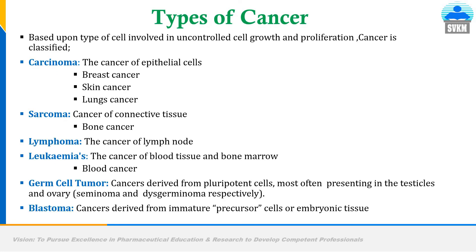What are the types of cancer? Based upon the type of cell involved in uncontrolled cell growth and proliferation, cancer is classified into the following types: carcinoma, sarcoma, lymphoma, leukemia, germ cell tumor, and blastoma. Carcinoma is cancer of epithelial cells, and examples include breast cancer, skin cancer, and lung cancer.